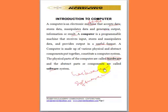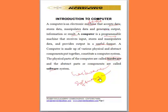This computer we are talking about is a programmable machine, meaning that when we have the hardware, without programming installed on the hardware, there is no way the hardware will be useful. It is the software that we install on the hardware that will direct the operation of the hardware, giving us a complete computer system.